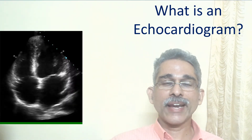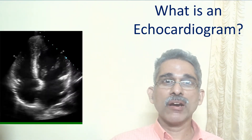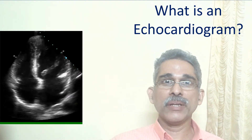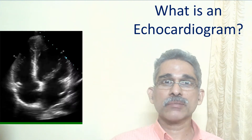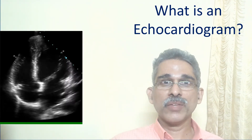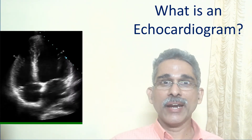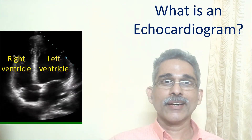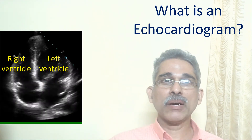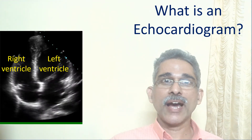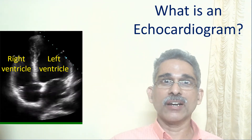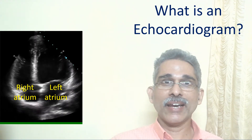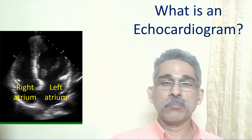This is an echocardiogram showing all four chambers of the heart and two walls between the upper and lower chambers. The view is from the lower part of the heart and appears upside down. Here are the two lower muscular chambers — right and left ventricle. Now the upper chambers, right and left atrium, have been marked.